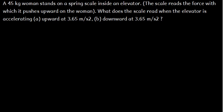What does the scale read when the elevator is accelerating part A upward at 3.65 m per second squared, and part B downward at 3.65 m per second squared?